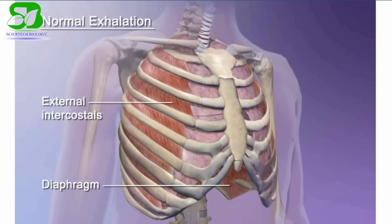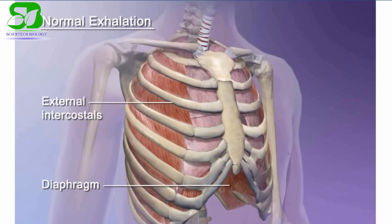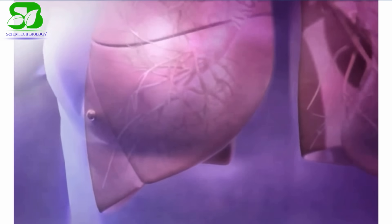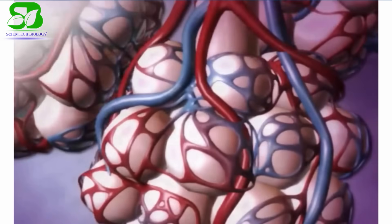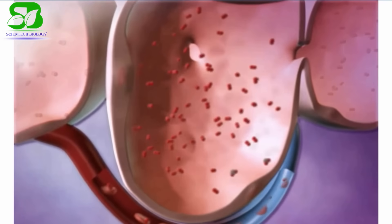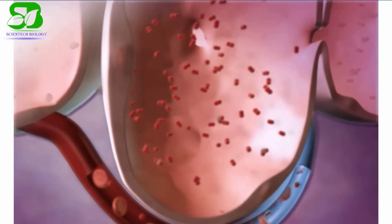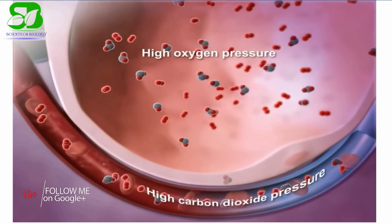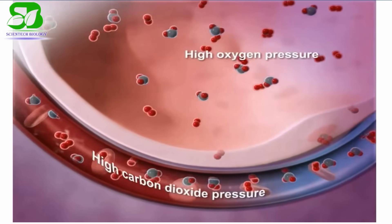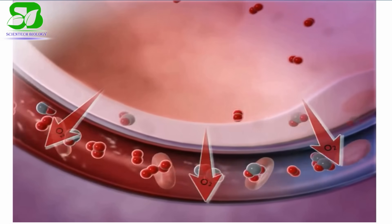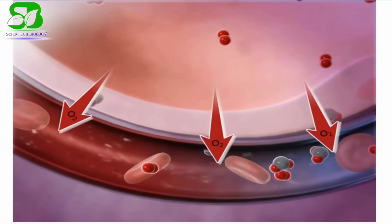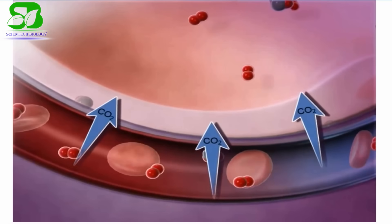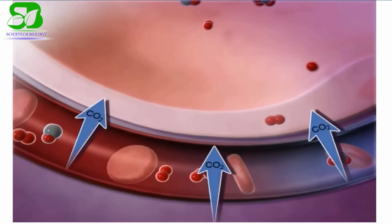During normal exhalation, the muscles relax and air is expelled out. Inside the lungs, oxygen from the air is exchanged for waste carbon dioxide from the bloodstream. This process takes place in the alveoli. Oxygen from inhaled air diffuses from the alveoli into the pulmonary capillaries, and carbon dioxide from oxygen-depleted blood diffuses from the capillaries into the alveoli.